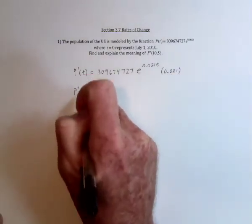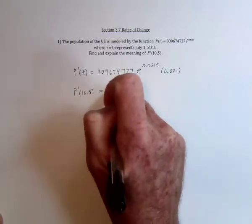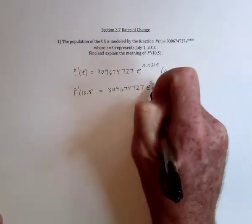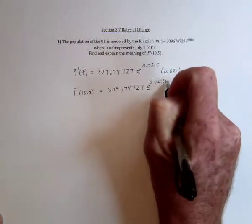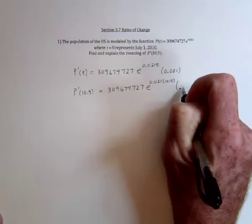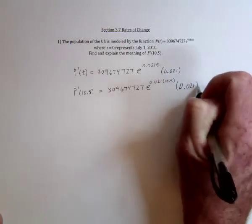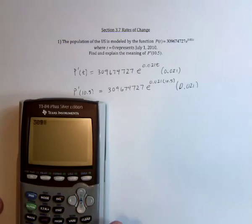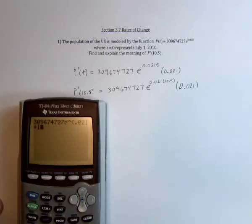And then the next thing to do is substitute in a 10.5. So 309,674,727, substitute a 10.5 for t. And then e to the 0.021 times 10.5, and then finally multiply by 0.021.